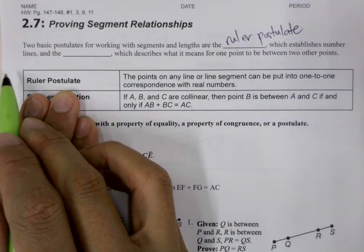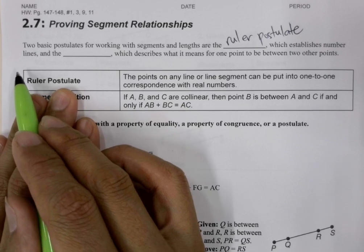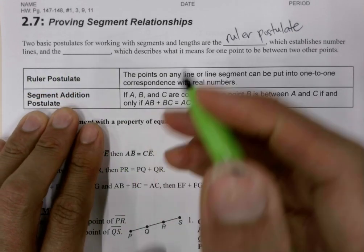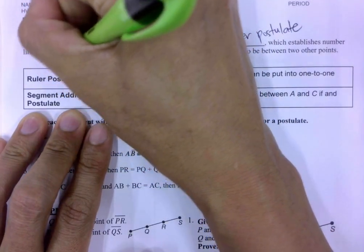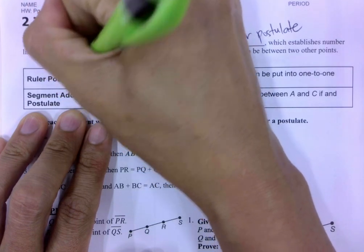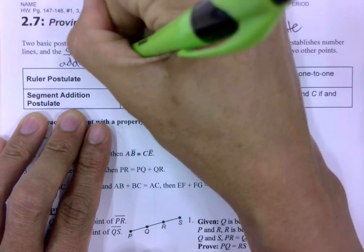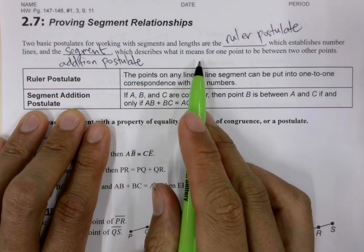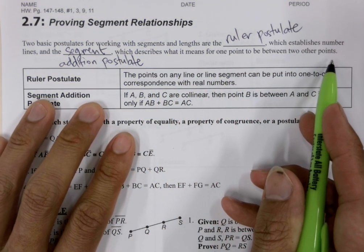which establishes number lines, so it allows us to even measure a figure, and the segment addition postulate, which describes what it means for one point to be between two other points.